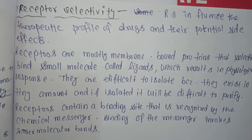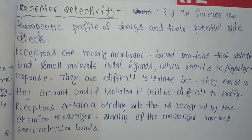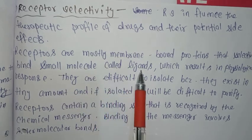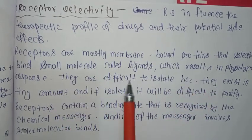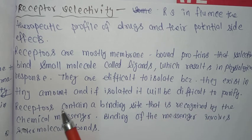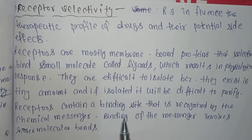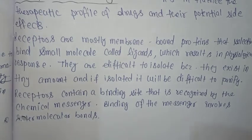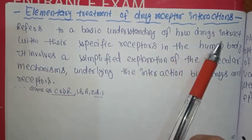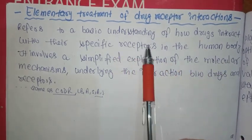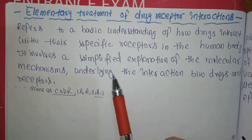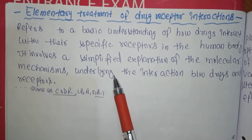Receptor selectivity influences the therapeutic profile of a drug and its potential side effects. Receptors are mostly membrane-bound proteins that selectively bind small molecules called ligands, which results in a physiological response. They are difficult to isolate because they exist in tiny amounts, and if isolated, they are difficult to purify. Receptors contain a binding site that is recognized by the chemical messenger, and binding of the messenger involves intermolecular bonds. The elementary treatment of drug-receptor interaction refers to a basic understanding of how drugs interact with their specific receptor in the human body, involving a simplified explanation of the molecular mechanisms underlying the interaction.